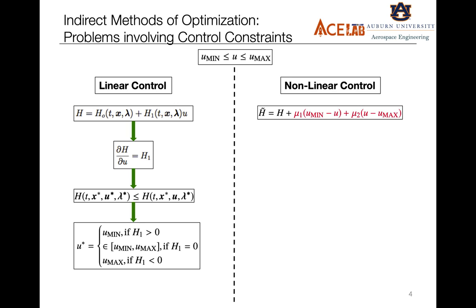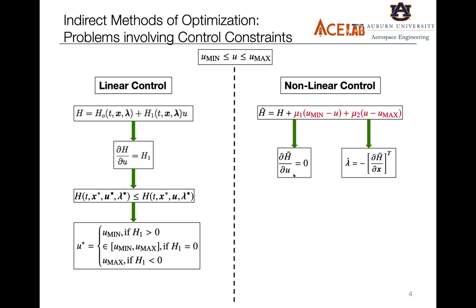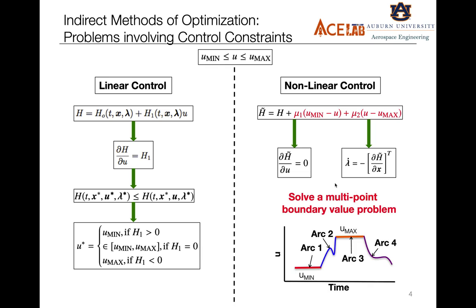There is another subclass of problems where the control appears in a non-linear form and there are constraints upon this control. What we need to do is augment the Hamiltonian with these extra constraints, and then extra multipliers emerge. We then need to solve for this more complicated version of the Hamiltonian, get the new dynamics for the co-states, and solve for a multi-point boundary value problem, which is very tough to formulate.